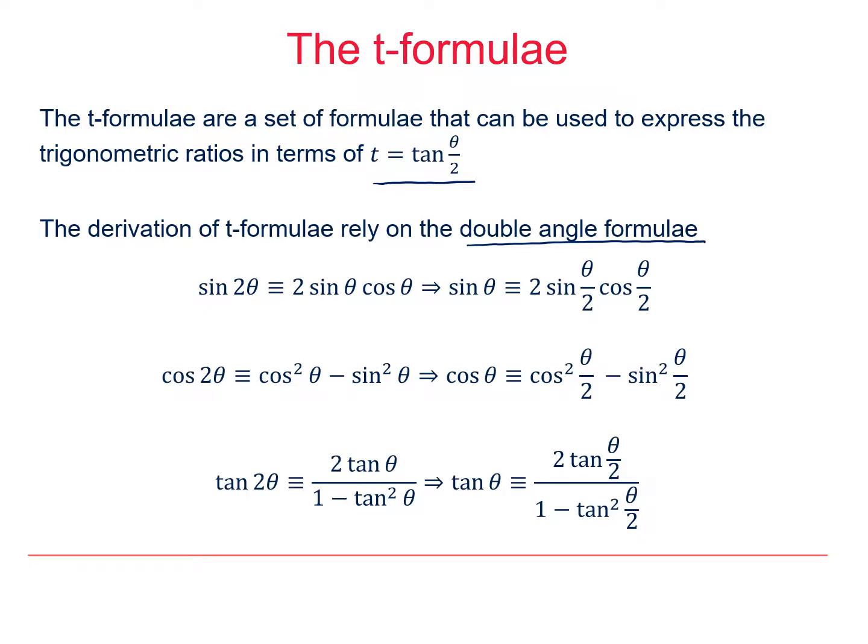In addition, to be able to derive these, we rely on the double angle formulae. So for instance, sine 2θ is identical to 2 sin θ cos θ. Now if we halve both those angles, we end up with sin θ is identical to 2 sin(θ/2) cos(θ/2). And then you can see the same for cos 2θ and tan 2θ. We're just halving those angles in the double angle formulae to make them effectively half angle formulae.